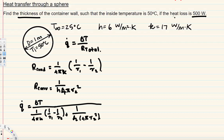We have q-dot which is 500 watts. Delta T is inside temperature minus outside temperature: 50 minus 25, which gives us 25 degrees Celsius, or 25 Kelvin. We have thermal conductivity, and the inner diameter is 1 meter, so inner radius r1 is 0.5 meters. The outer radius r2 is what we are trying to find, because thickness equals r2 minus r1.